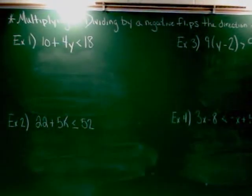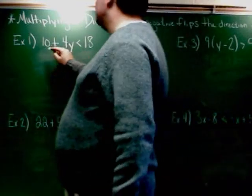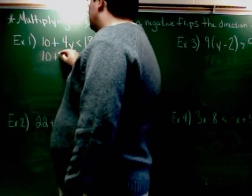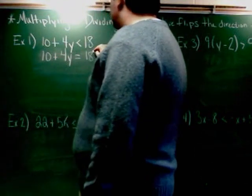Let's go to example 1. 10 plus 4y is less than 18. So the very first thing I'm going to do is go ahead and change this into an equal sign. So I want to change it into 10 plus 4y equals 18.